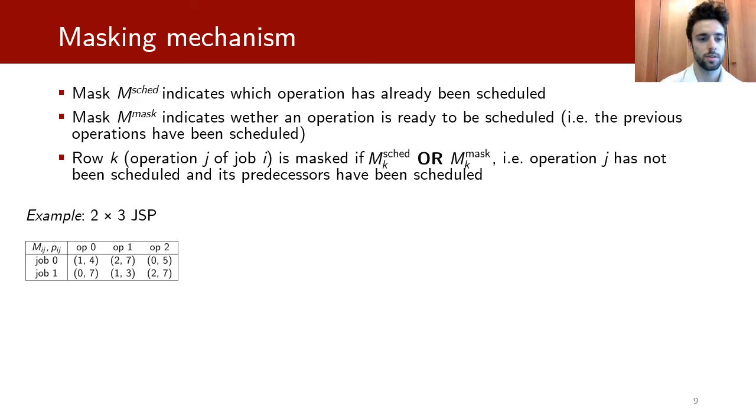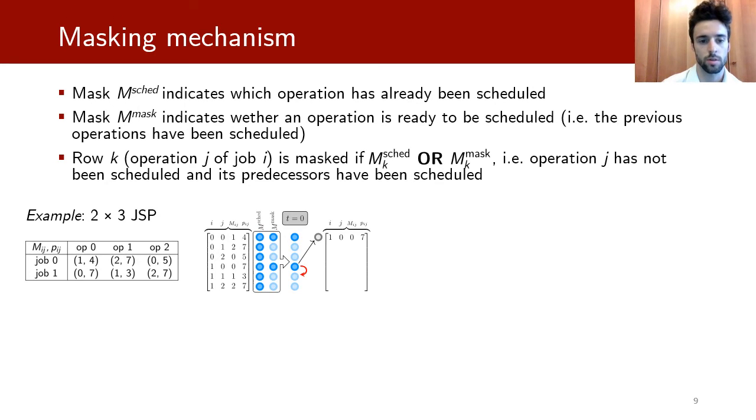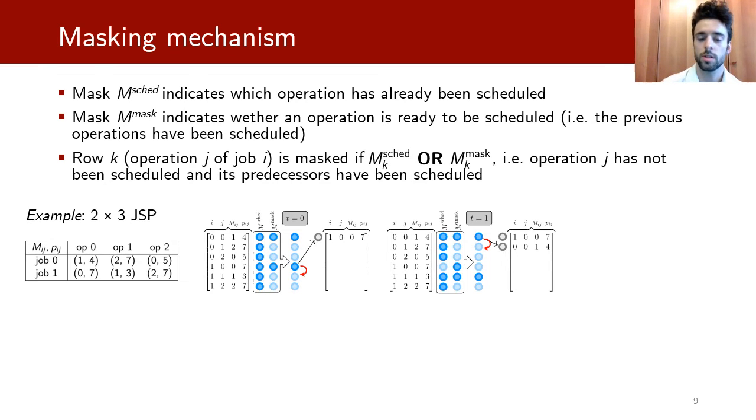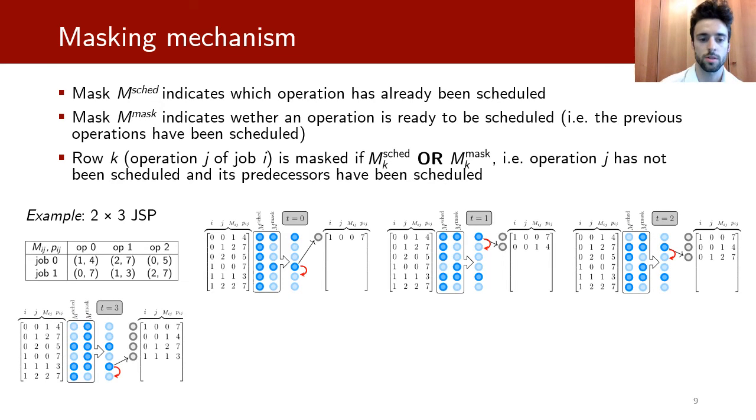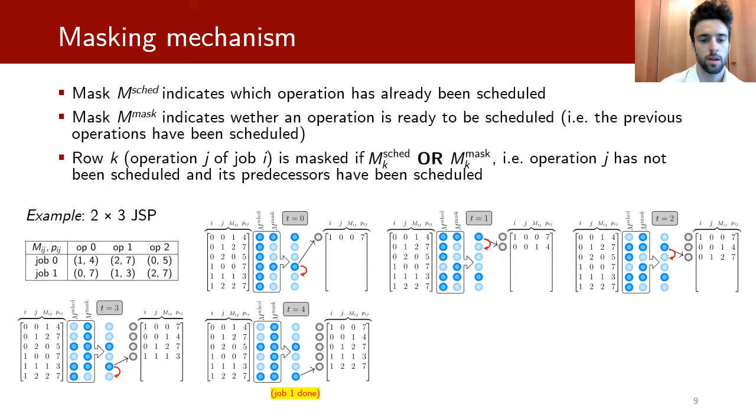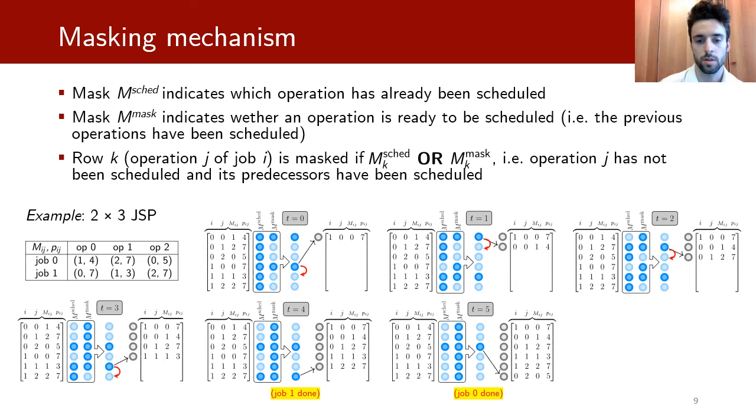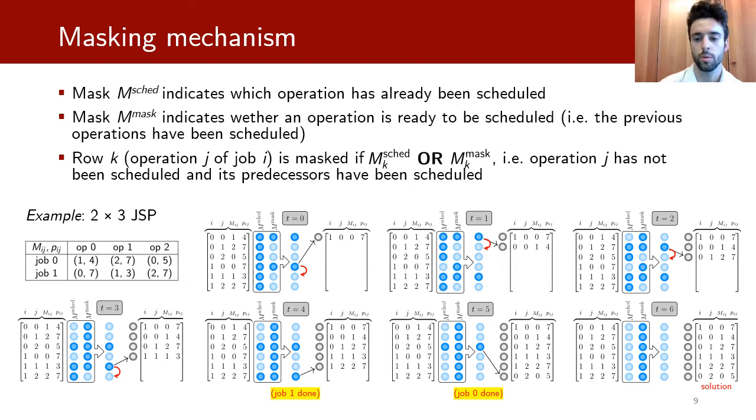You can see a very easy instance of the JSP, two jobs and three machines. You can see at step 0 the model could choose operation 0 of job 1 to be scheduled first. Then in step 1 you can see that the masking has been changed, so the same operation cannot be selected twice. In step 1 operation 0 of job 0 is selected and you can go on with this approach until job 1 has been completely scheduled. You can see that every operation of job 1 has been already scheduled. Job 0 is as well finished and in step 6 we have a complete solution.